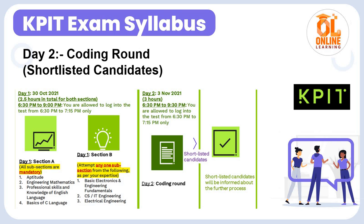Day 2 is the coding round, only for shortlisted candidates. Day 1 is 2.5 hours total for both Section A and Section B. If you are shortlisted after Day 1, you will receive a link for the Day 2 test on 3 November 2021, which is a 3-hour coding test. Shortlisted candidates from Day 2 will be informed about the further selection process.